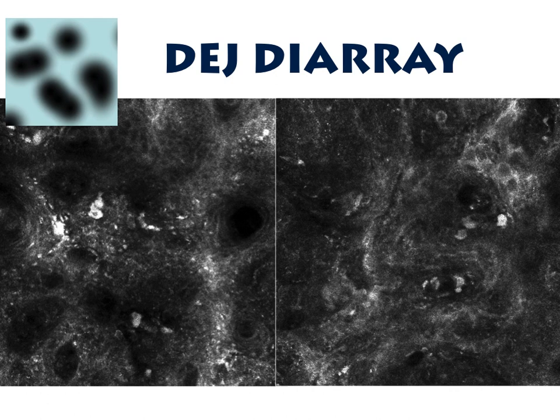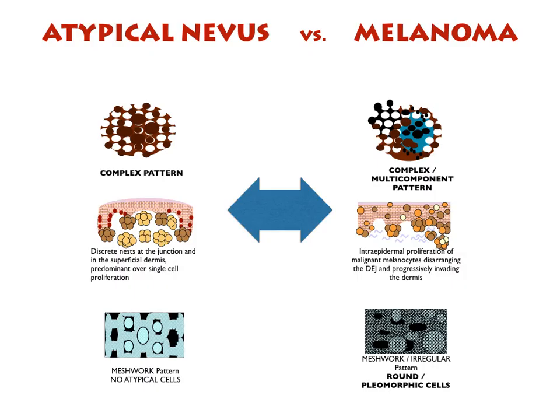Architectural disorder — corresponding to alteration of the dermal-epidermal junction — is the second most relevant feature for melanoma diagnosis. Using these fundamental features, it is possible to distinguish dermoscopically atypical nevi constituted by discrete nests and without significant cytological atypia from early melanoma, usually characterized by atypical cells and junctional disorder.